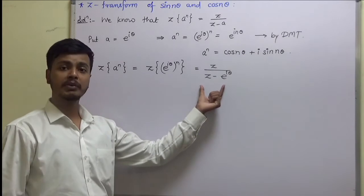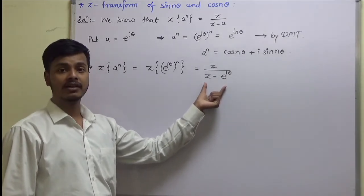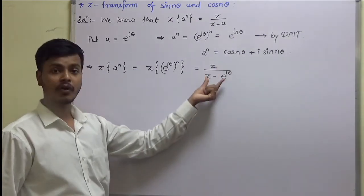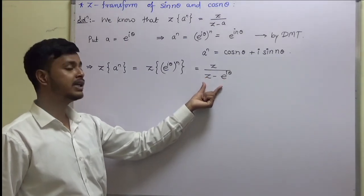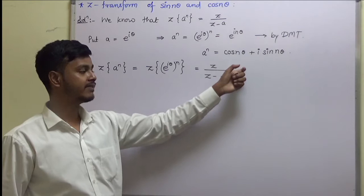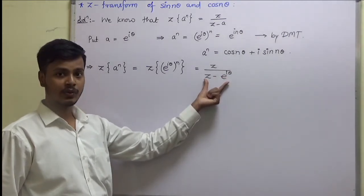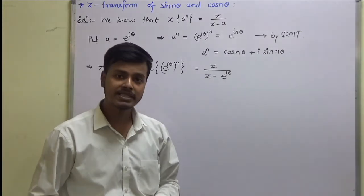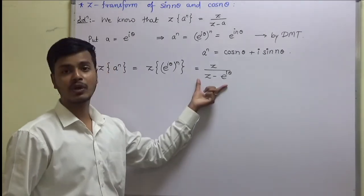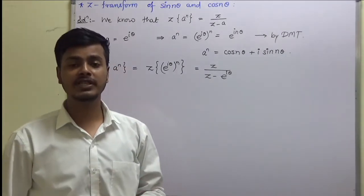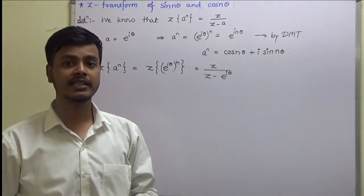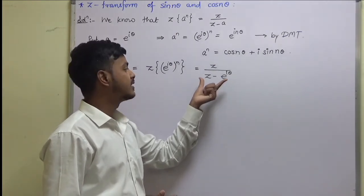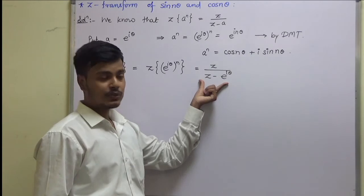Now we are going to make use of the algebra of complex numbers. To solve this division of complex numbers, we have to multiply and divide by the conjugate of the denominator. So my question is: if Z minus e to the power iθ is a complex number, then what should be its complex conjugate? You can pause the video for a few seconds and try to write down the complex conjugate.